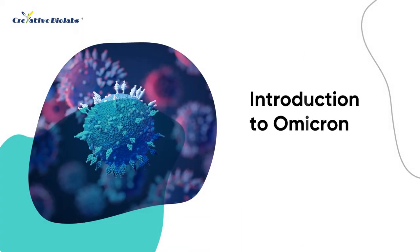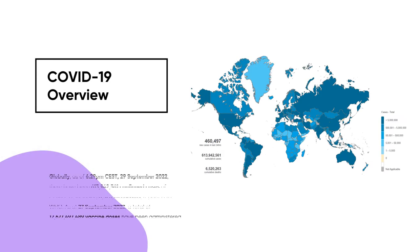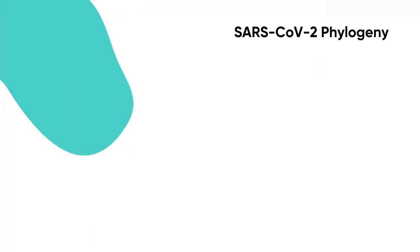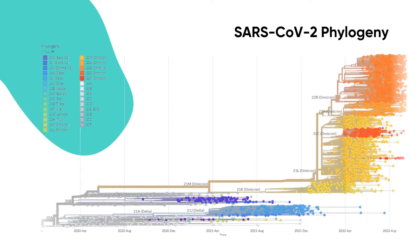The world has been battling COVID-19 since it first broke out. To date, over 600 million cases have been confirmed worldwide. Over time, the mutation of the SARS-CoV-2 virus has led to various variants, including Alpha, Beta, Gamma, and Delta. Among them, the Delta variant has been shown to cause more serious damage on a global scale.